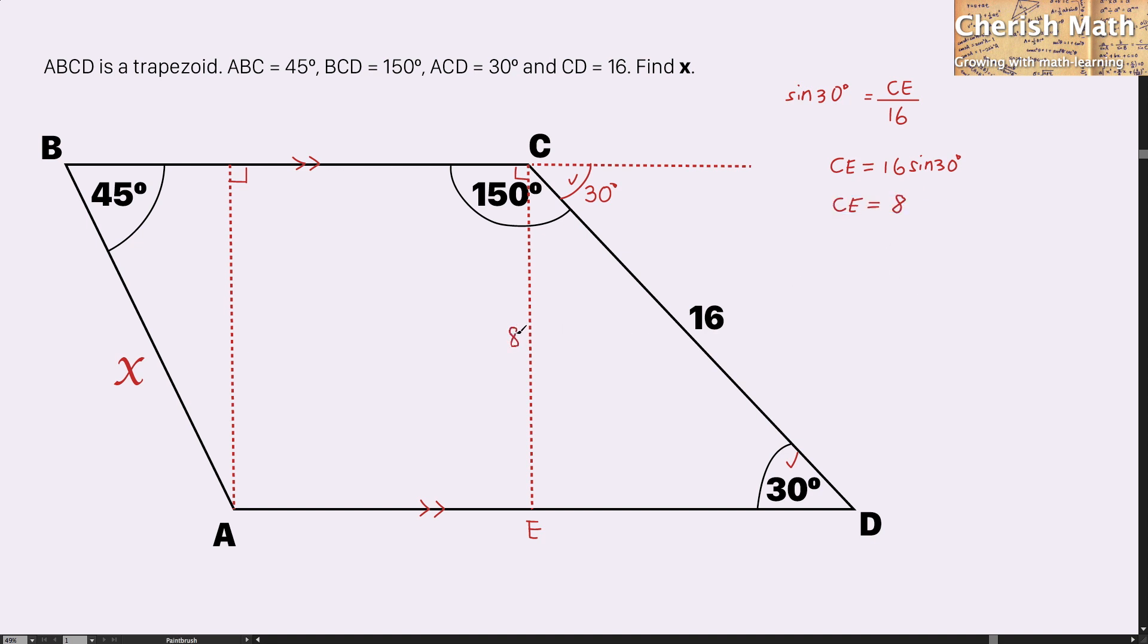I got 8 here, since the line CE and AF are the same in length. To find the value of X, I'm referring to the triangle BFA. Again, I'm going to use trigonometry. Sine 45 degrees equals 8 over X.